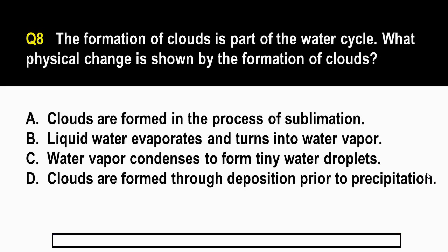We're halfway through guys! For question number eight, the formation of clouds is part of the water cycle. What physical change is shown by the formation of clouds? A. Clouds are formed in the process of sublimation. B. Liquid water evaporates and turns into water vapor. C. Water vapor condenses to form tiny water droplets. And letter D. Clouds are formed through deposition prior to precipitation.